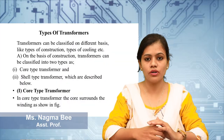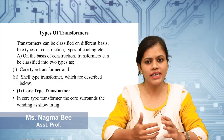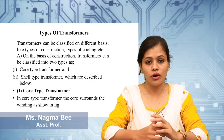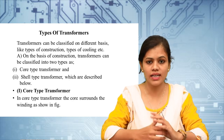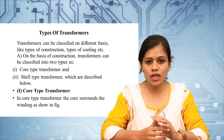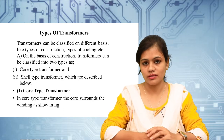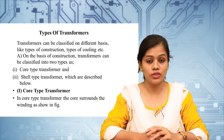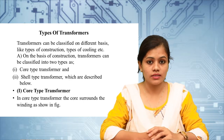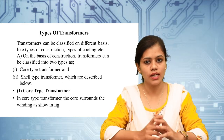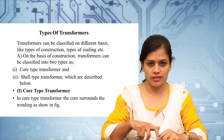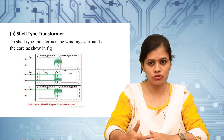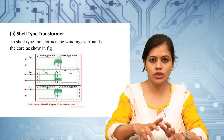Next we go to the types of transformer. There are many types used according to construction, turns ratio, windings, and power system application. According to construction, there are two types: core type transformer and shell type transformer. In a core type transformer the core surrounds the winding, whereas in a shell type transformer the winding surrounds the core.